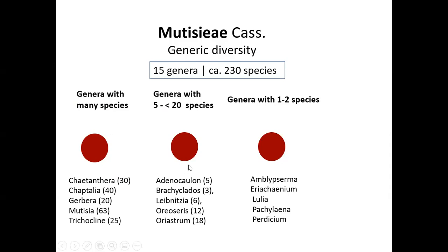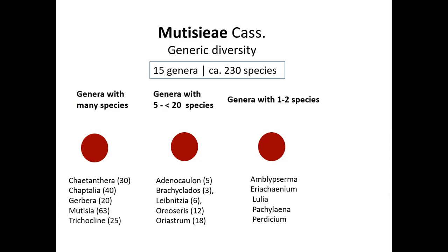There are also genera with fewer than 20 species, such as Adenocaulon, Brachyclados, and Leunisia, and genera with one or two species — Lulia and Paquilena with one species, Ambrisopora and Perdicium with two. The tribe is monophyletic; phylogenetic analyses performed with different molecular markers and different species show the monophyly of the tribe. Here you can see some representatives of Mutisieae and the sister tribes Nassauvieae and Onoserideae.